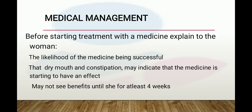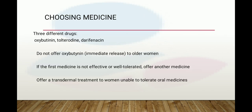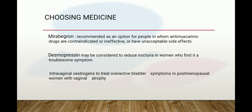Medical management should be explained to the woman, including the likelihood of success and that dry mouth and constipation may indicate the medicine is starting to work — but she may not see benefits until at least four weeks of treatment. Drug choices include oxybutynin, tolterodine, and solifenacin. Do not offer oxybutynin immediate release to older women. If the first medicine is not effective or tolerated, offer another. Consider transdermal medicines for women unable to tolerate oral formulations. Mirabegron is recommended for patients in whom antimuscarinic drugs are contraindicated, ineffective, or have unacceptable side effects.